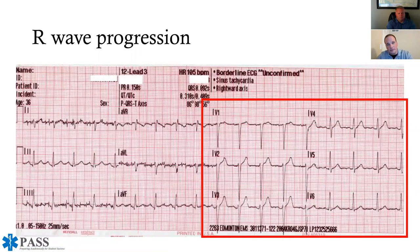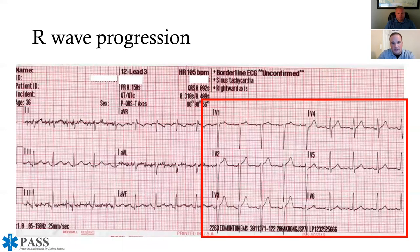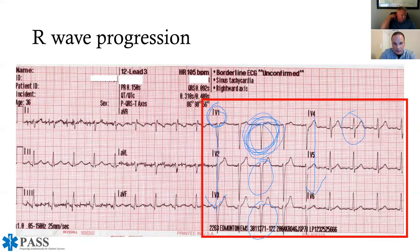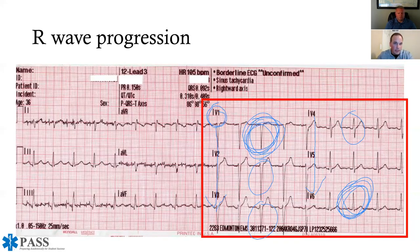R wave progression is another tool to confirm proper precordial lead placement. Looking at V1 through V6, there should be a progression from a negative deflection in V1 to a positive deflection in V6. If the QRS complexes slowly progress from entirely negative in V1 to entirely positive in V6, your chest leads are placed correctly and not switched.